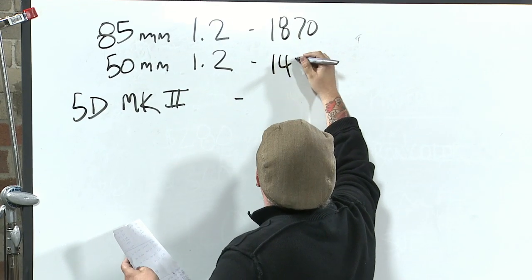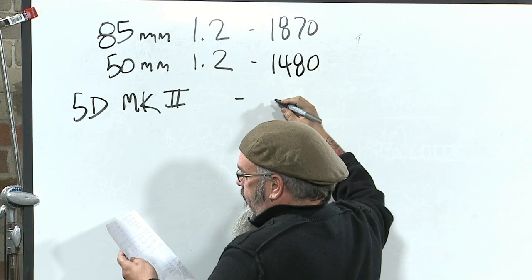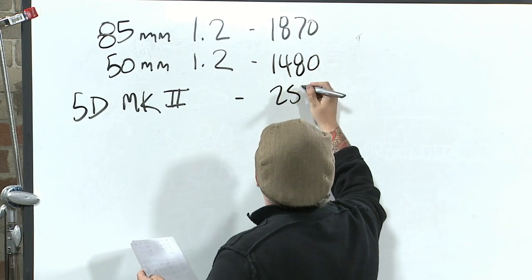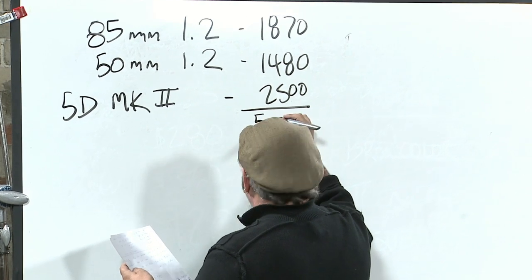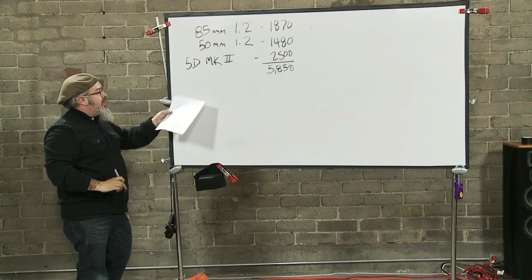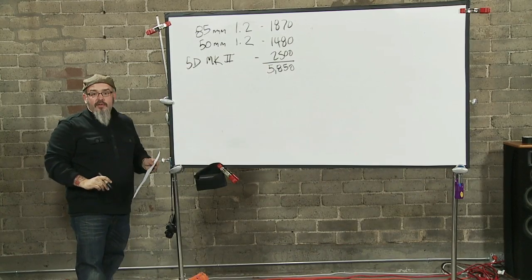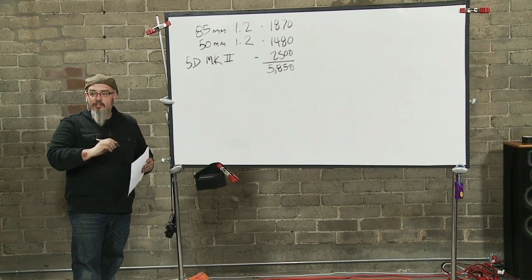That 85 is going to cost you $1,870. These are prices I pulled off of B&H today. That 50 millimeter is going to cost you $1,480, and that 5D Mark 2 is going to be $2,500. We are at a grand total of $5,850. We have two absolutely gorgeous lenses and a nice 5D Mark 2 at $5,850.